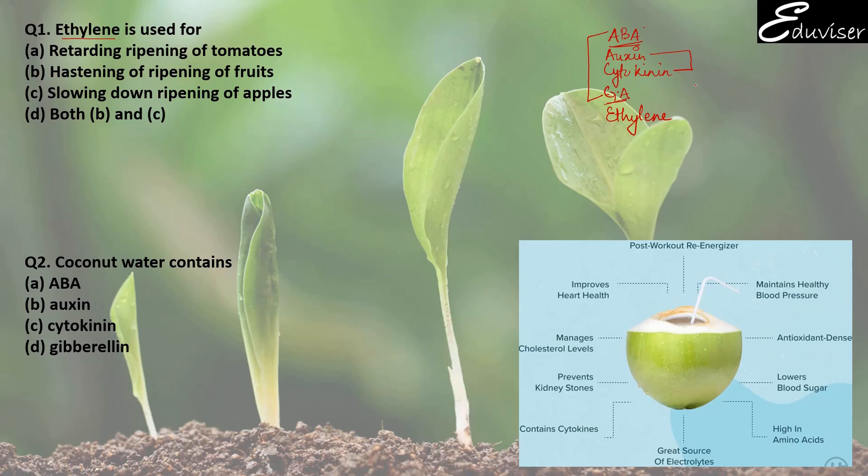Auxin causes apical dominance, so cytokinin does just the opposite work. So these five hormones play a very major role in plant growth and development.